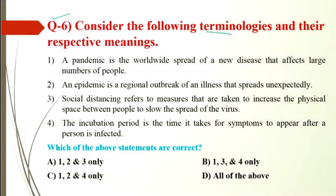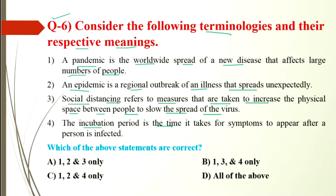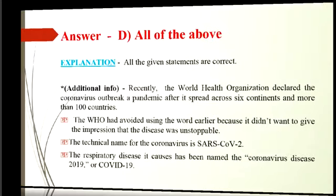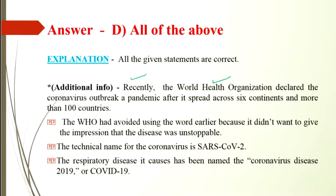Question number 6: consider the following terminologies and their meanings. Statement 1: a pandemic is the worldwide spread of a new disease affecting a large number of people. Statement 2: an endemic is a regional outbreak of an illness that spreads unexpectedly. Statement 3: social distancing refers to measures taken to increase physical space between people to slow the spread of virus. Statement 4: the incubation period is the time it takes for symptoms to appear after a person is infected. All statements are correct, so the answer is option D. WHO declared the coronavirus outbreak a pandemic after it spread across 6 continents and more than 100 countries. WHO had avoided using the word earlier because it did not want to give the impression that the disease was unstoppable.